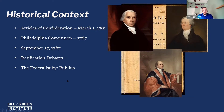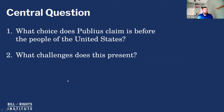So they wrote under the name Publius. The first essay in this collection is now Federalist One, and that's what we're going to look at today. The questions I'm going to focus on are: what choice is Publius putting before the people of the United States, and what challenges does debating over this choice present?